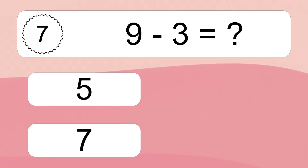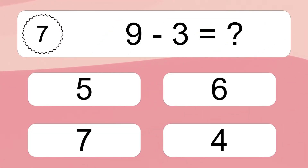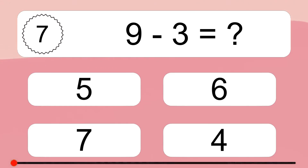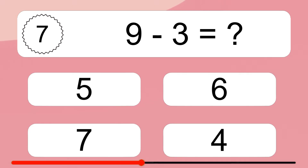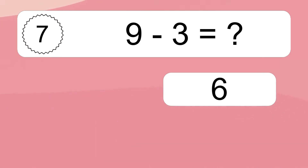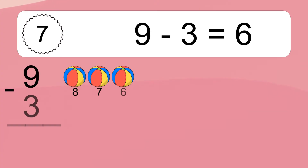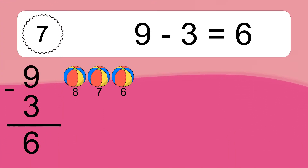9 minus 3 equals what? 9 minus 3 equals 6. Let's count it. 8, 7, 6.